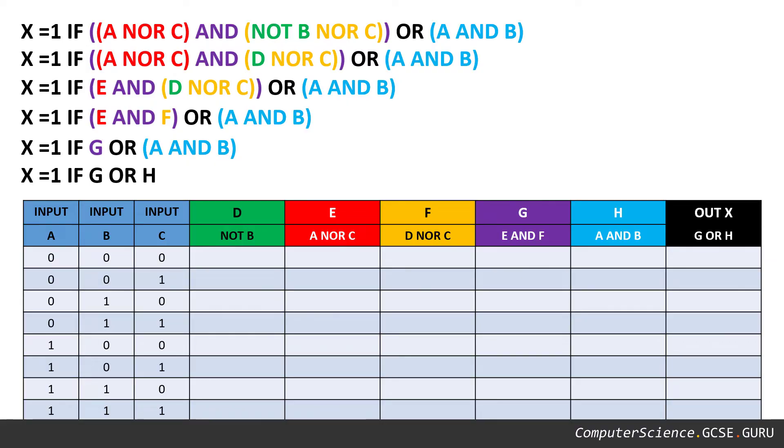So all we've got to do, I say all we've got to do, but we've got to solve G or H to work out the outputs for this truth table. But of course, before we can do that, you would need to work through all the mini sub problems that we've created here. And eventually you'll be able to then work on the final issue of the output of X.